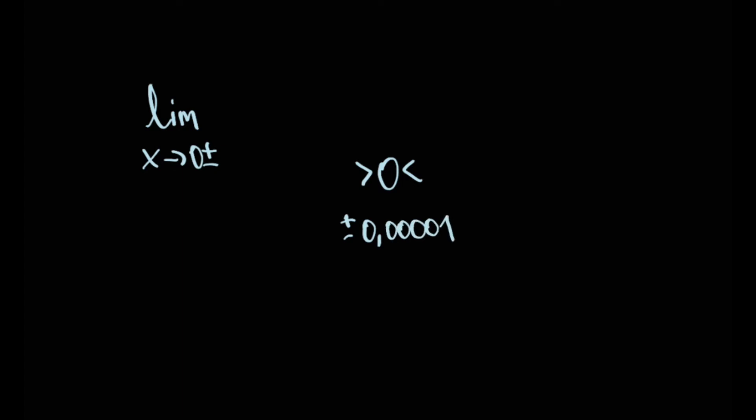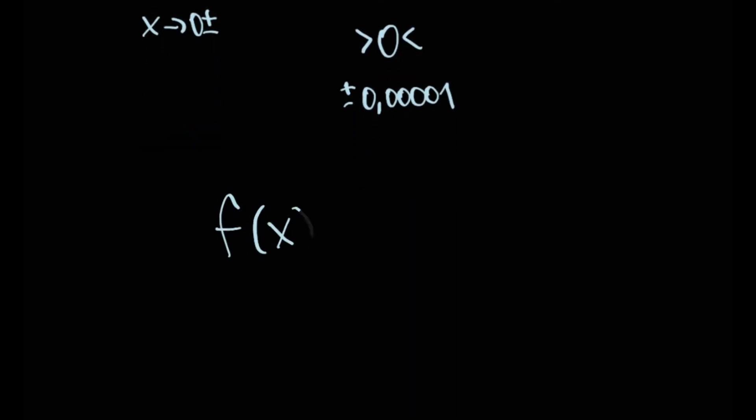Next, we're going to set our function, and our function is going to be f of x equals 1 through x. So we have a limit of x approaches 0 plus minus f of x equals 1 through x.